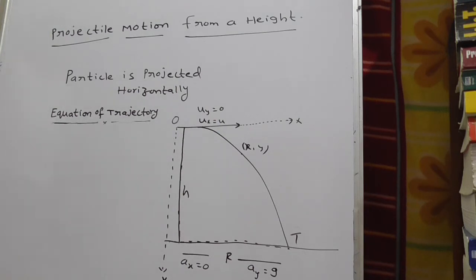So observe clearly from diagram: ux is equal to u, uy equal to 0 and ax equal to 0, ay is equal to g.